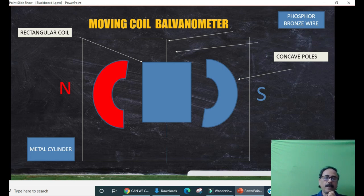That is, when radial field is generated, the rectangular coil will experience maximum torque.